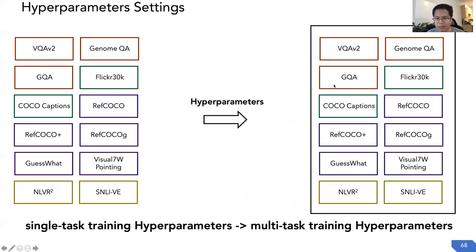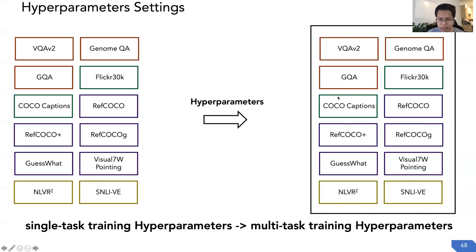Thanks to the Dynamic Stop and Go training scheduler, we can directly use the hyperparameters from single-task settings and transfer them to multi-task without any additional fine-tuning of those parameters.